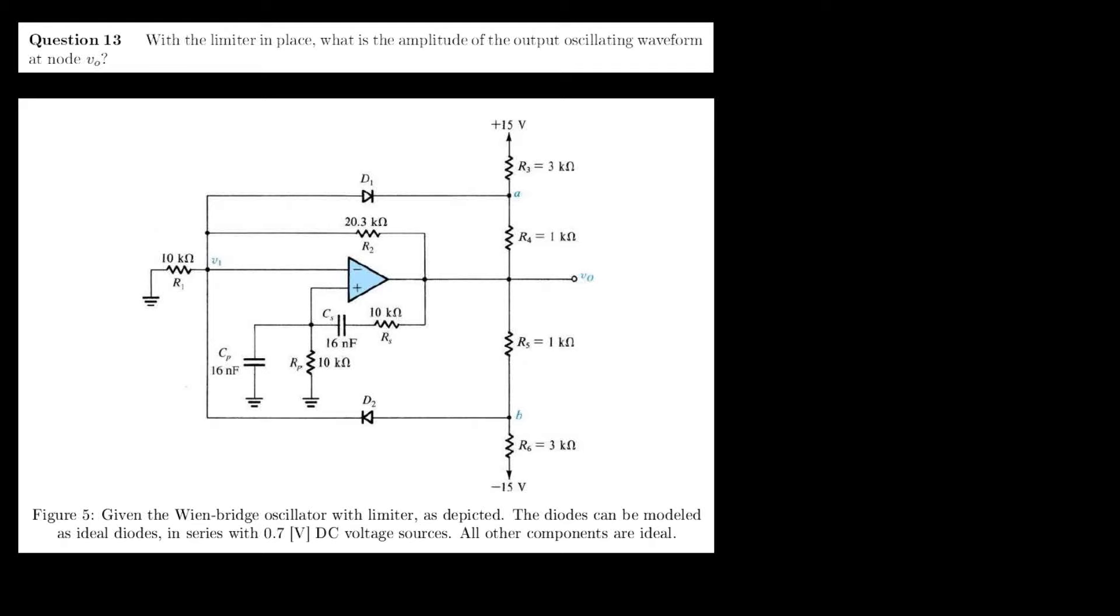This video will discuss question 13, which goes as follows. With the limiter in place, what is the amplitude of the output oscillating waveform at node VO?